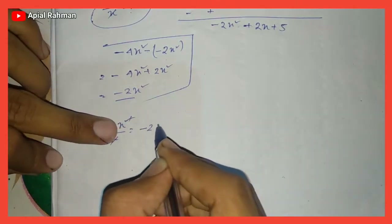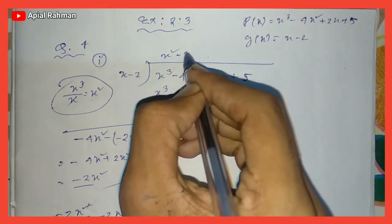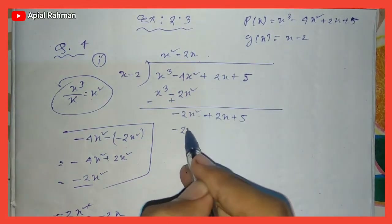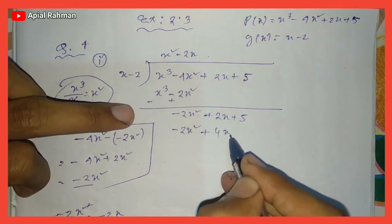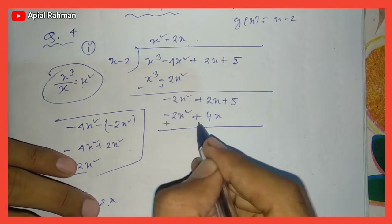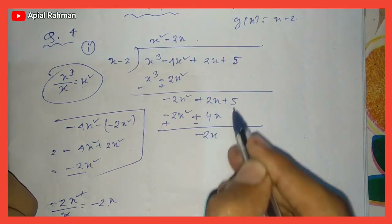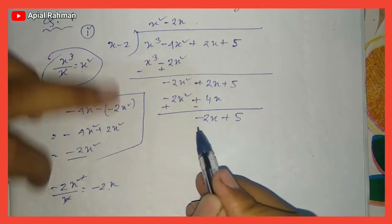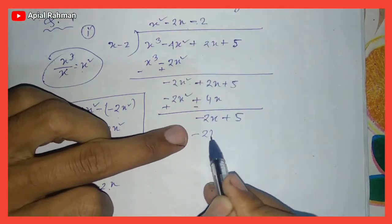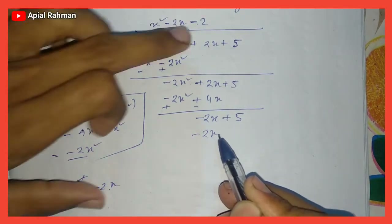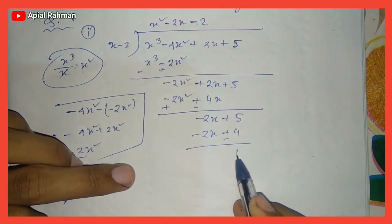Minus 2x minus 2x... then minus 2x is subtracted. We get minus 2x, plus 4x. Plus 4x, so plus minus... plus 2x minus 2x. Then minus 2x minus 2x plus 2x plus plus plus 1.